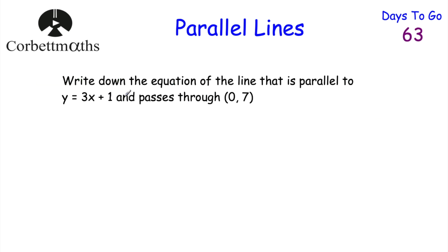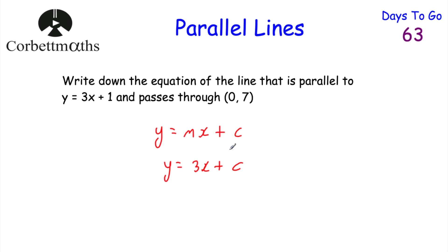The next question says: write down the equation of a line that's parallel to y equals 3x plus 1 and passes through the point (0, 7). Feel free to press pause. The equation will be in the form y equals mx plus c. Since it's parallel, the gradient must be 3, so y equals 3x plus c. Now (0, 7) is on the y-axis — the y-intercept is 7. So the answer is y equals 3x plus 7.